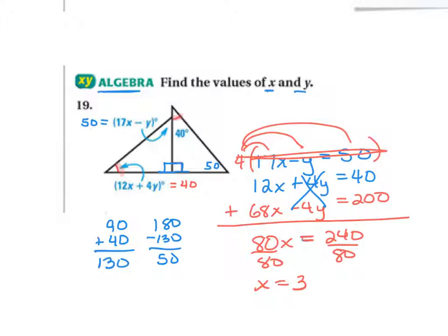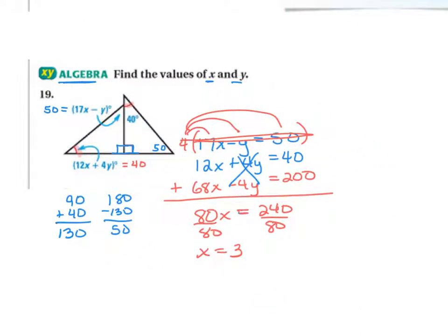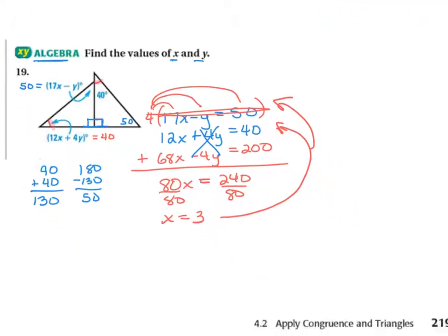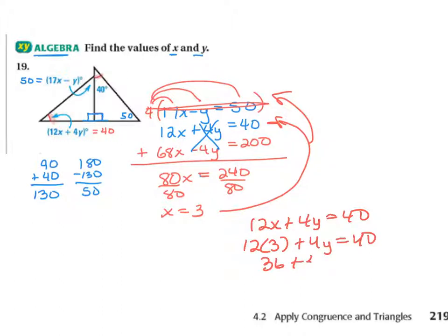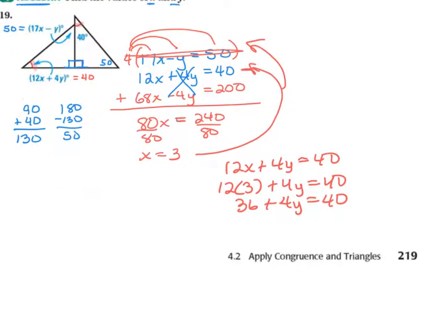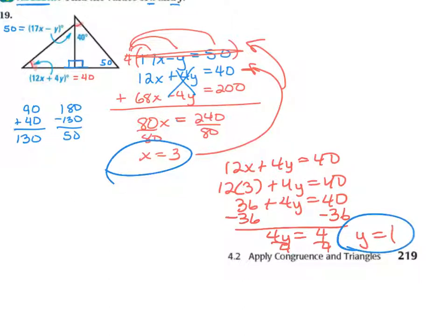Now that I've found the value of x, I can plug it into one of the original equations. Taking the blue one: 12x plus 4y equals 40. So 12 times 3 gives 36; 36 plus 4y equals 40. Subtract 36, leaving 4y equals 4. Divide by 4, so y equals 1. The answer to this question is x equals 3 and y equals 1.